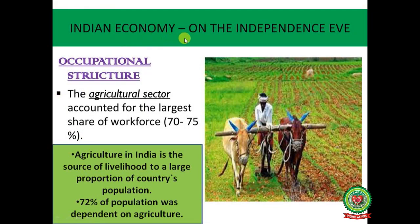Next is the Indian economy on the eve of independence. India's industrial system was not properly set up; India's industrial condition was very poor and the agriculture sector was also not well developed. Maximum population was dependent on agriculture due to the decaying of handicraft industries. The agriculture sector accounted for the largest share of the workforce — 70 to 75 percent.